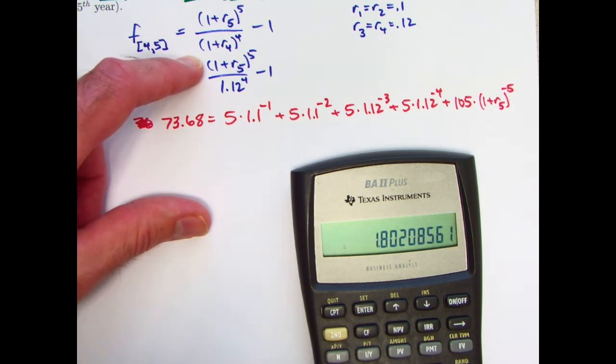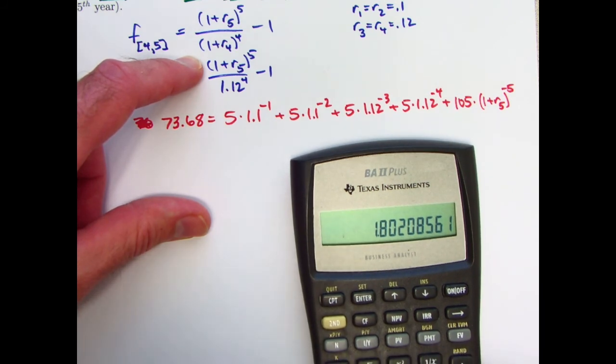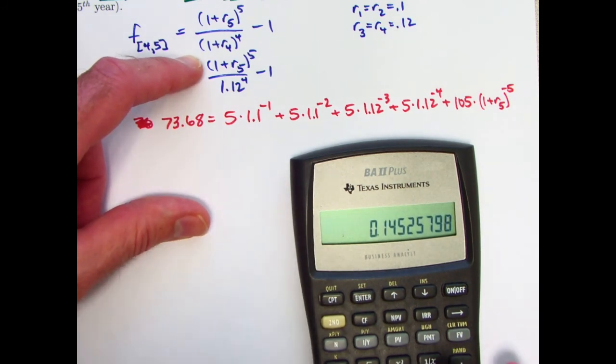And if I wanted to solve for R5, I'd take the fifth root of this, raise it to the 0.2 power. But I don't have to. Now I'll multiply by what's in register 4, as I mentioned earlier, and then subtract 1.